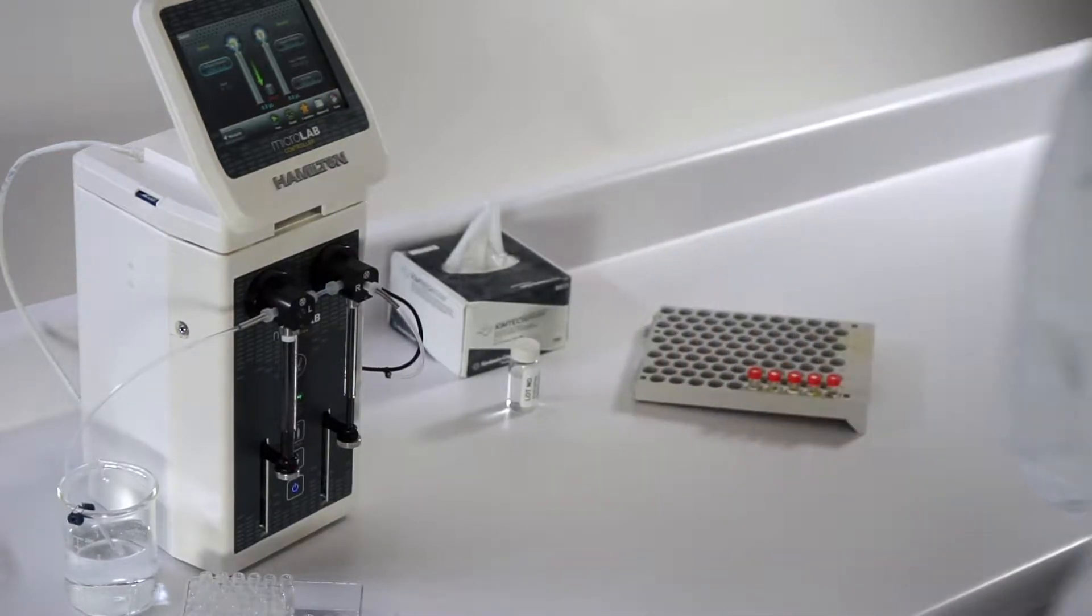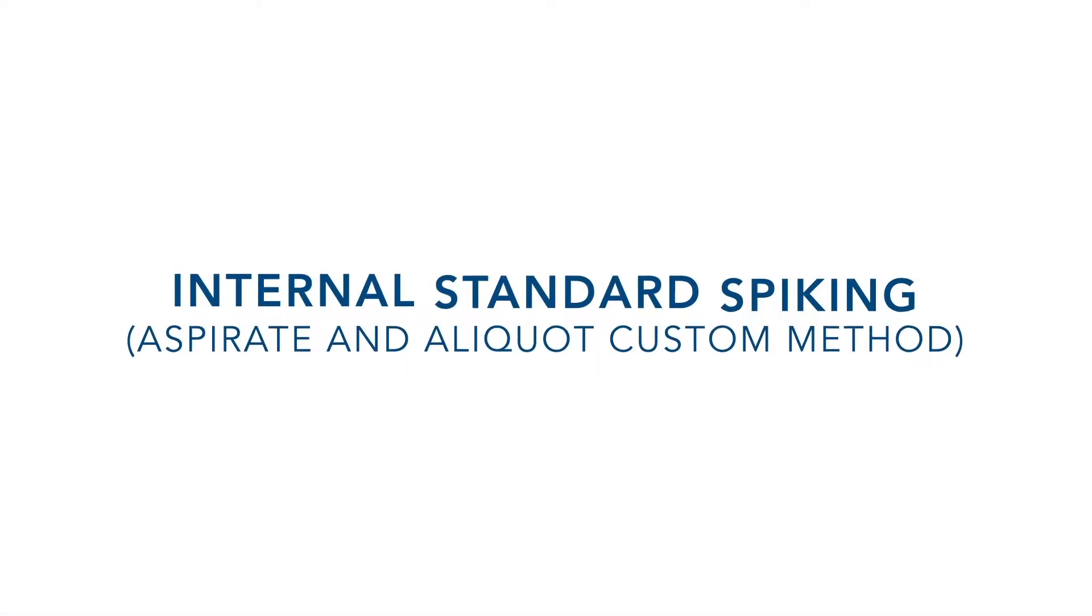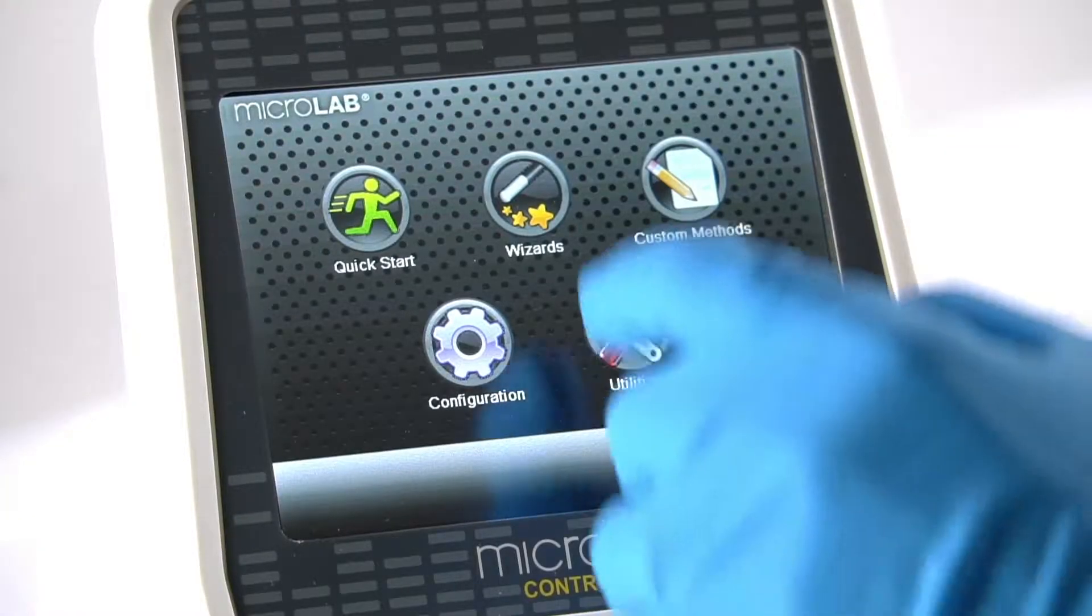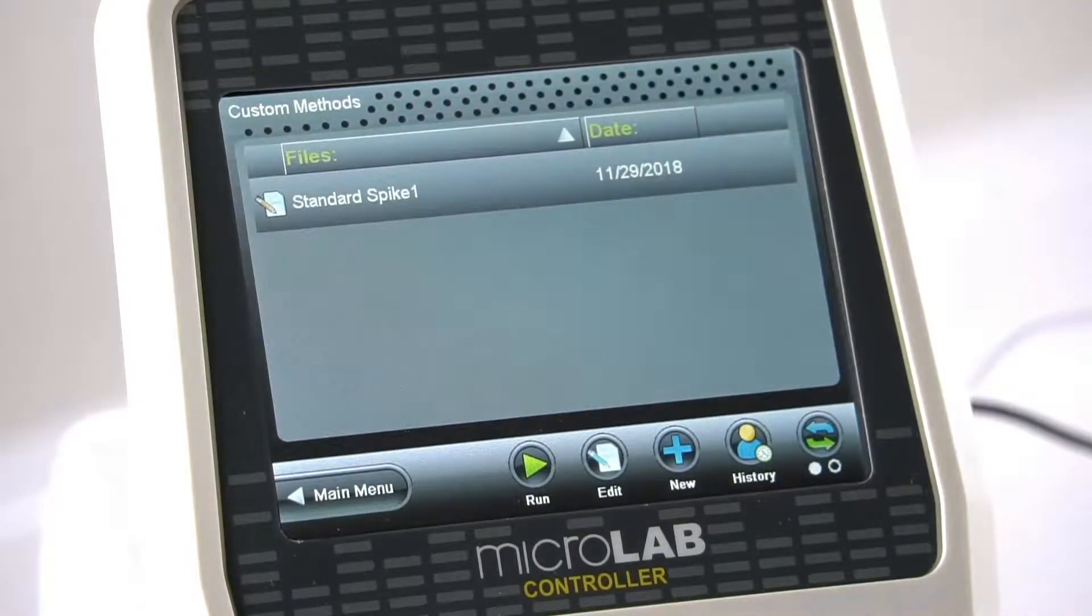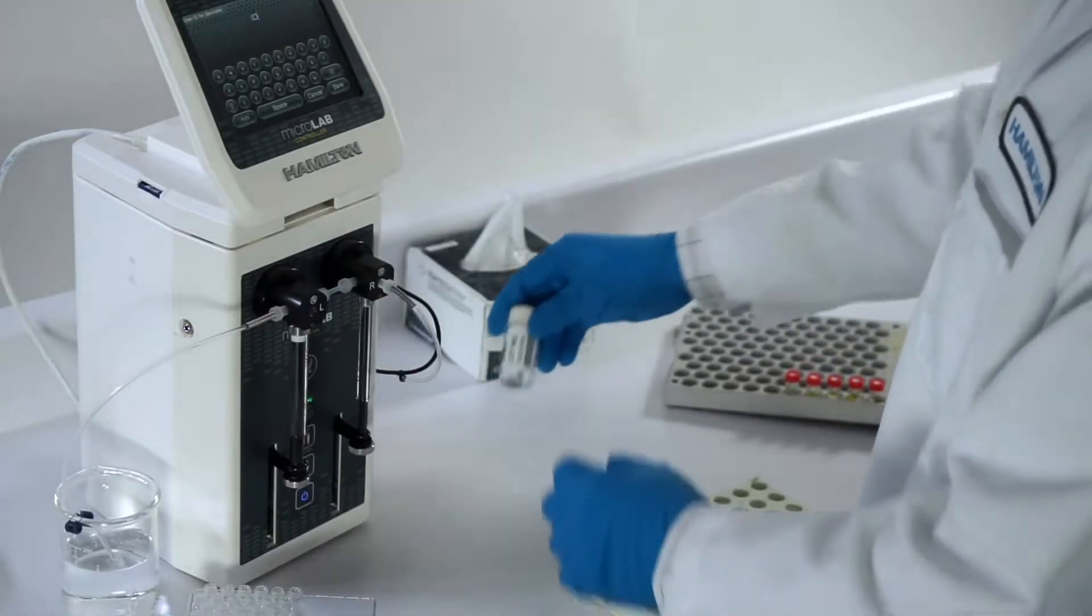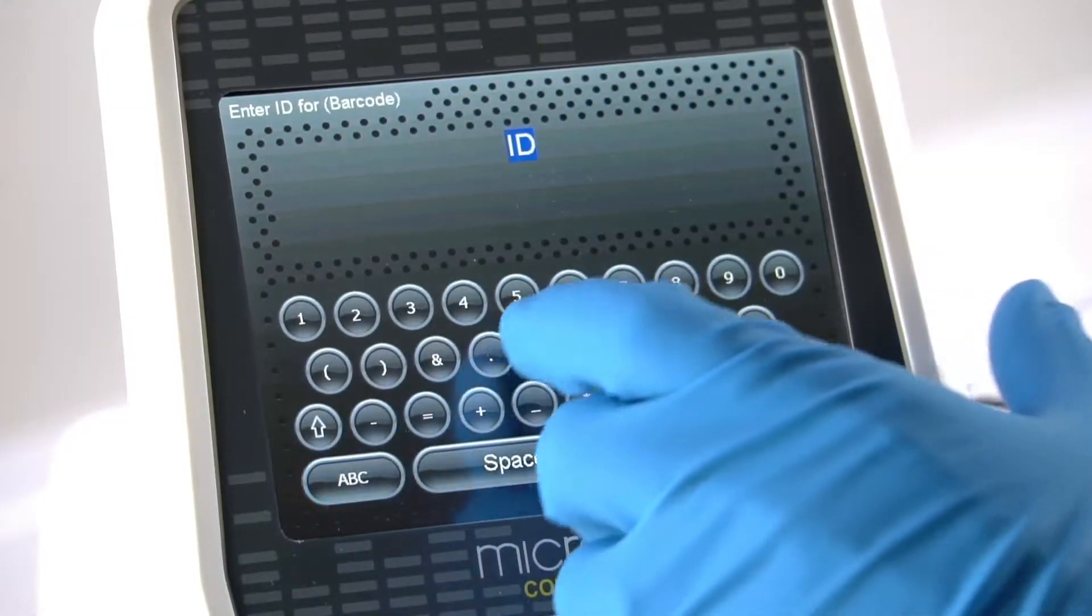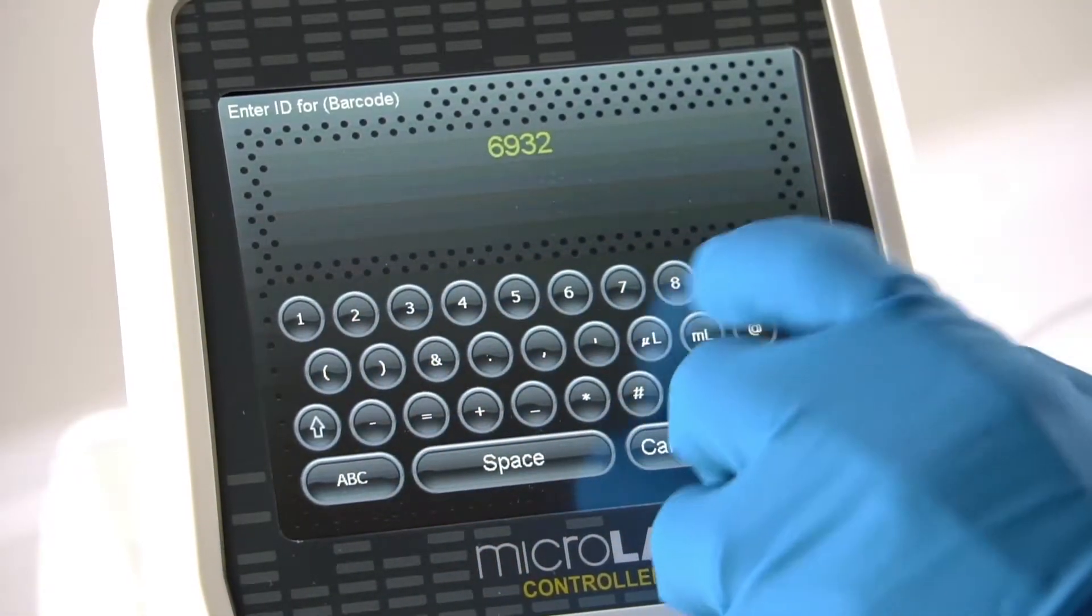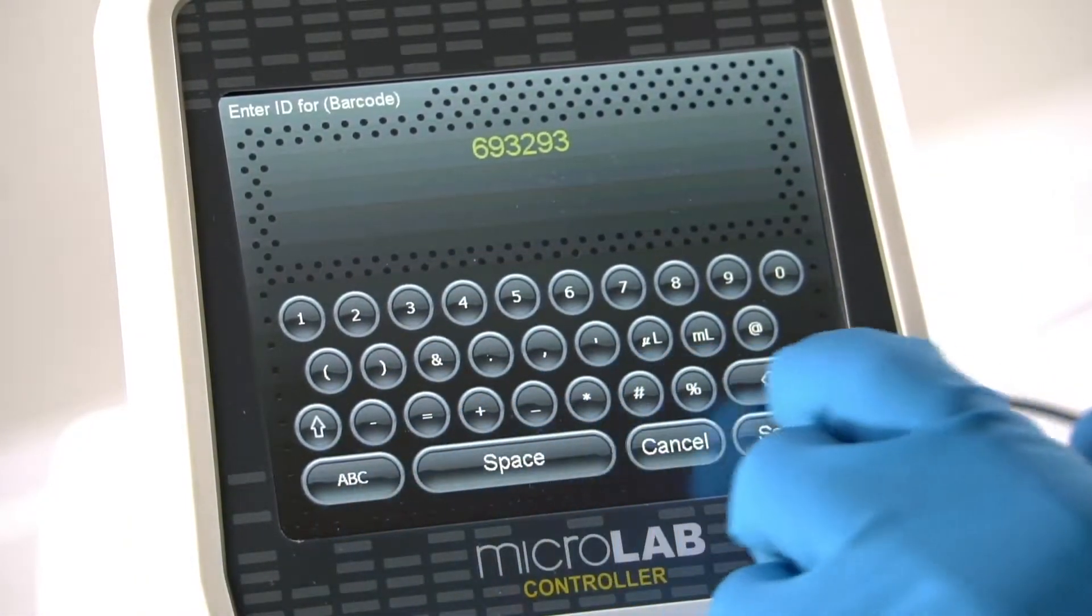In many applications, this begins with the spiking of an internal standard into each unknown. This process can be completed with a custom method programmed on the Microlab's controller. For traceability, lot numbers and sample IDs can be entered or barcode scanned at any step of a custom method.